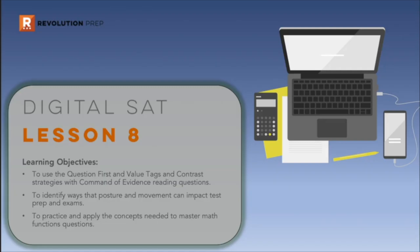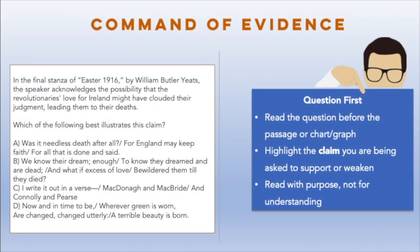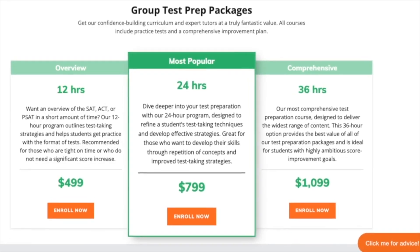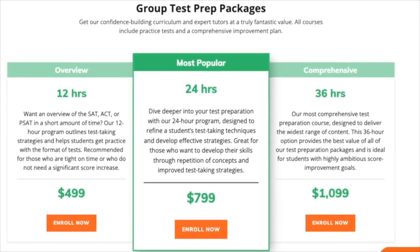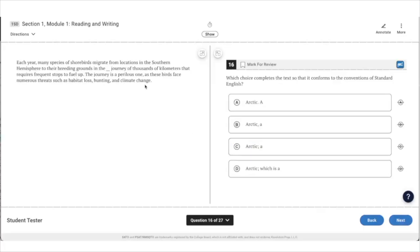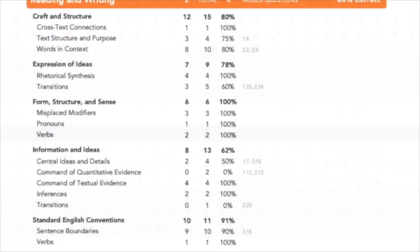We do hope you found some value in those tips. If you're looking to really boost your SAT score, you might want to consider signing up for one of our small group courses. These courses are designed for students who thrive in a collaborative group environment, available with 12, 24, or 36 hours of expert instruction. Each course includes five full-length practice exams and detailed score reports. Use the link in the description to sign up for a small group course with Revolution Prep right now.